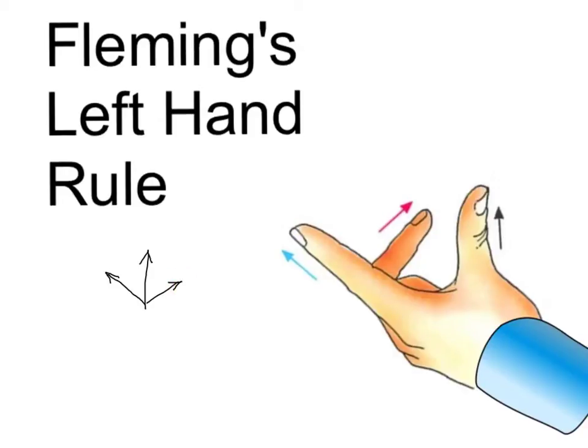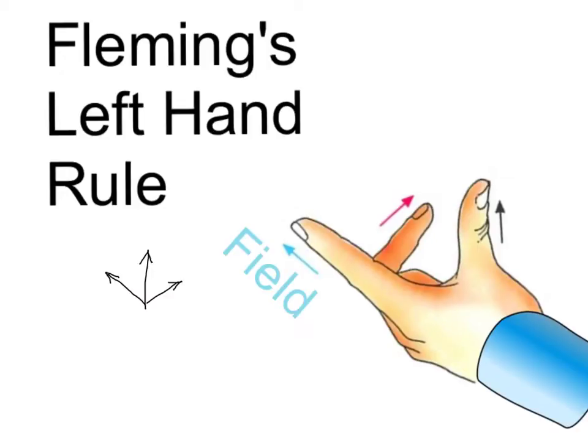So, your pointing finger always represents the magnetic field. And if there are poles, this will point from a north towards a south. Your second finger represents current. And it always flows from a positive towards a negative. Your thumb always represents thrust. And so, this is always relating to a wire in a magnetic field. There's current flowing in the wire. You line your second finger up with that current. There's a magnetic field that the wire is in. You line your first finger up with that. And whatever way your thumb is now pointing will tell you the way that wire will be pushed.